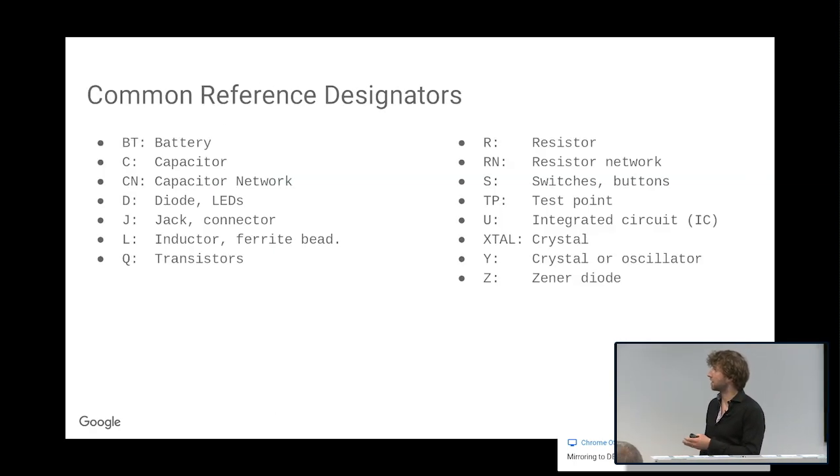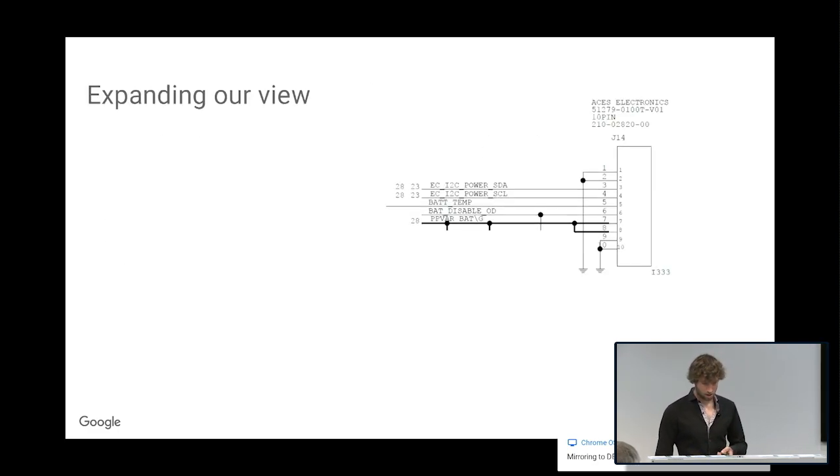There's a whole bunch of different designators. There is sort of a standard, but not really. People will screw it up all the time. The ones you'll see the most are Q, U, J, D, C, and R. Sometimes you'll see Y.